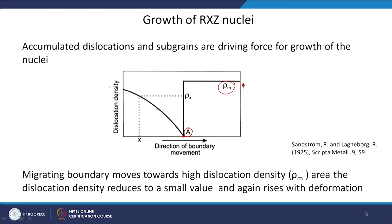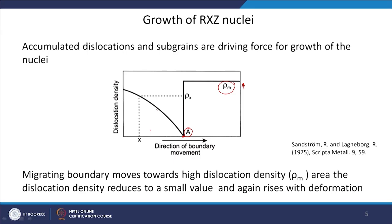What happens if you keep deforming the material while recrystallization is occurring? These new strain-free grains will again accumulate dislocations. It is not that once strain-free grains are growing the recrystallized microstructure is permanent. If deformation has not stopped and we are still deforming, these new grains will start having dislocation density increasing within them. Just at the grain boundary moving into the strained matrix, the dislocation density is very low, but at any particular distance x the dislocation density is ρ_x, and it may reach the current matrix dislocation density as shown.